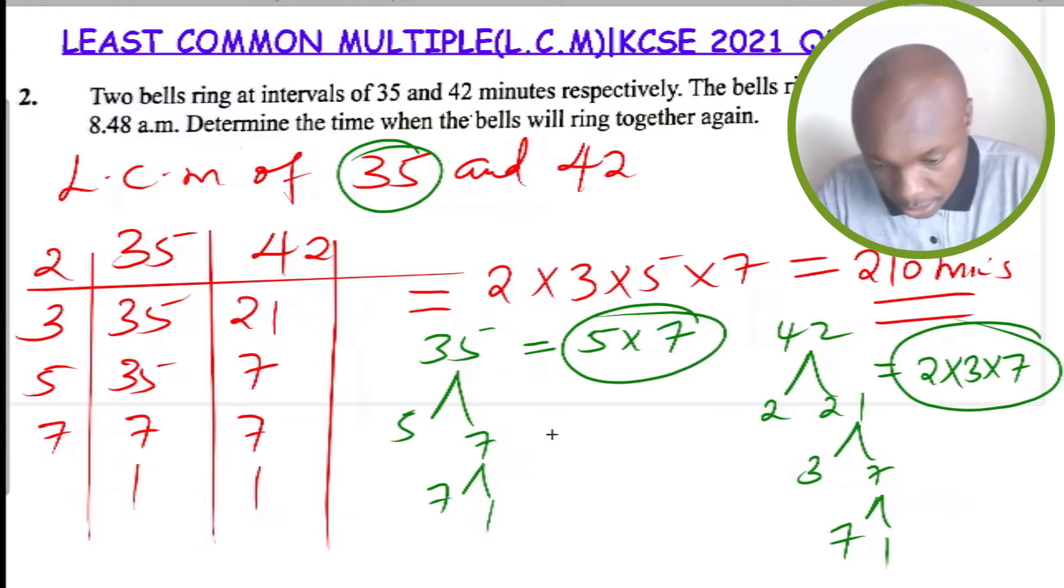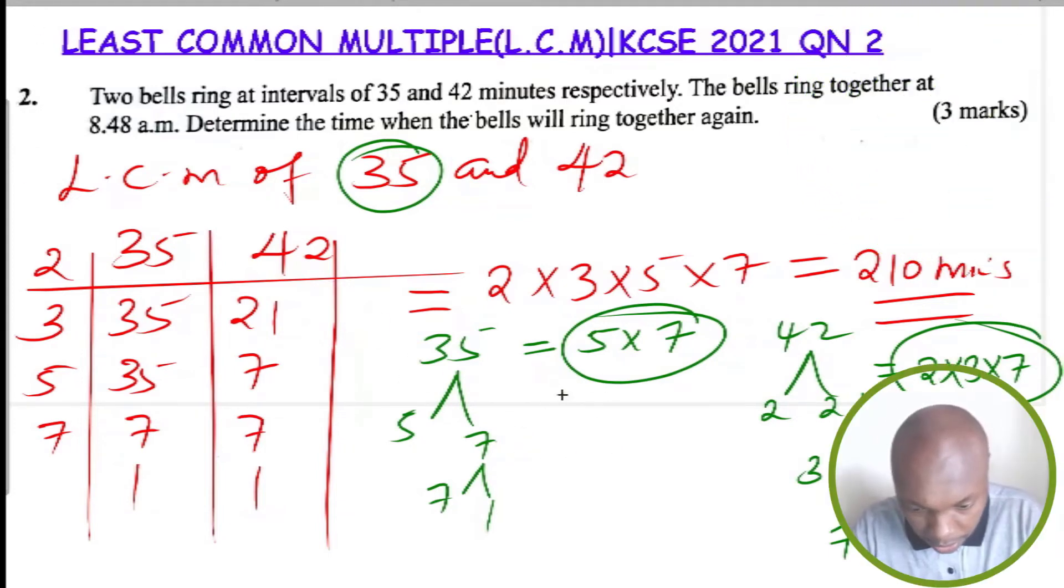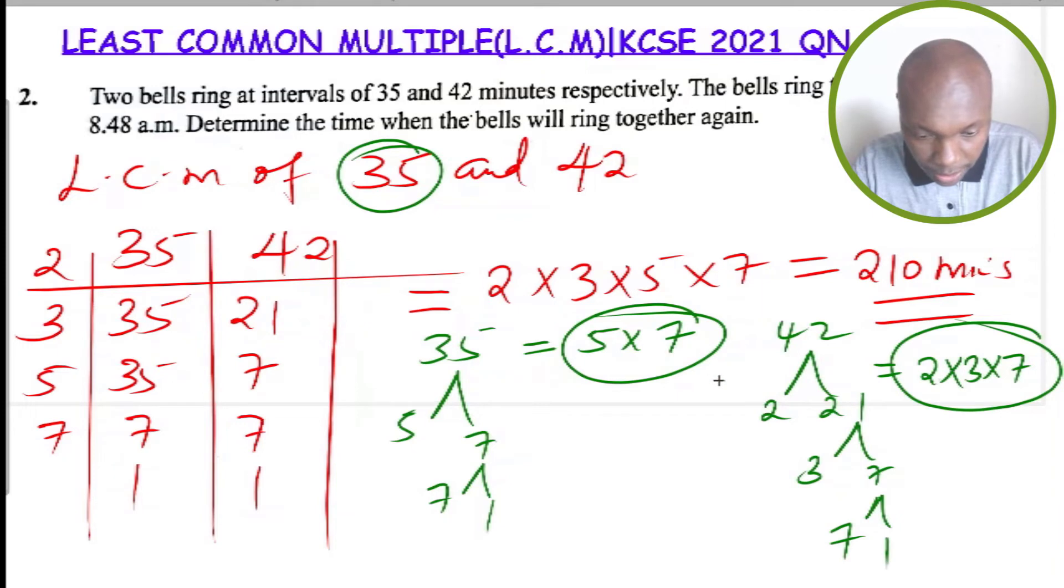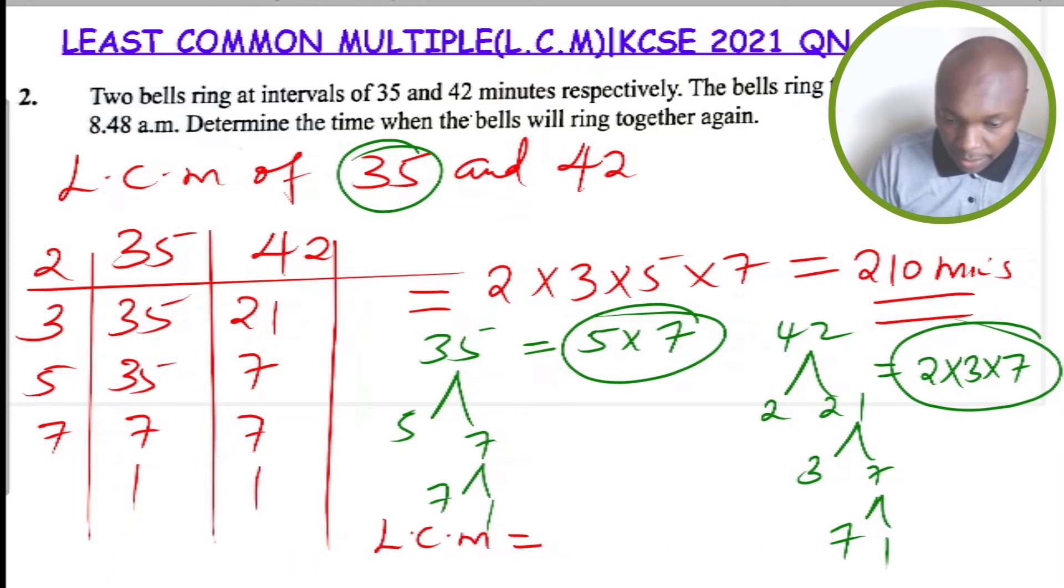So you have 5 multiplied by 7 for 35, and 2 multiplied by 3 by 7. To get the LCM using the factor method, we pick all the factors that are present in 35 and 42. But in cases where we have a repeated factor like 7 is a repeated factor, we just pick it once.